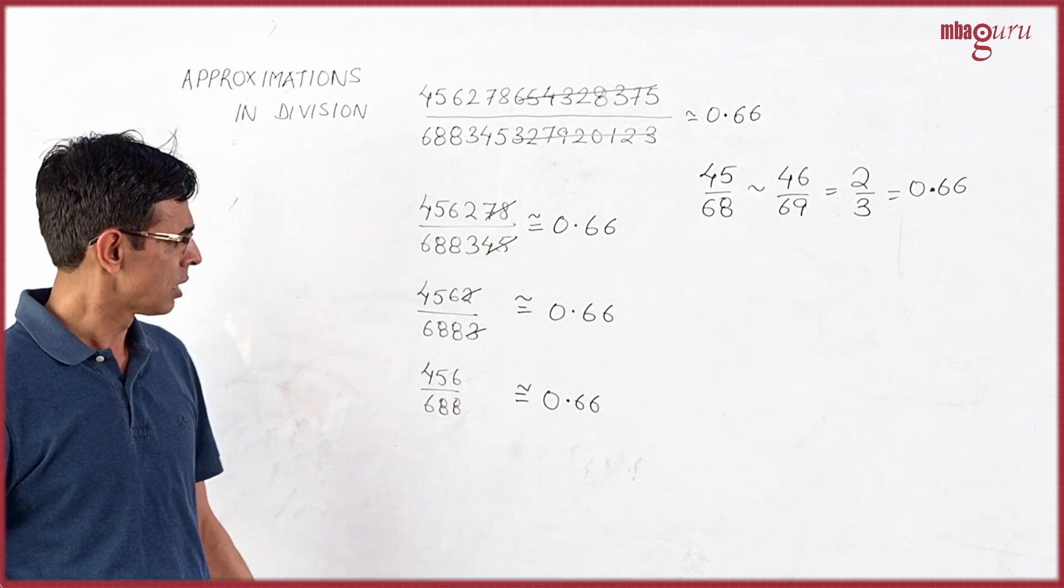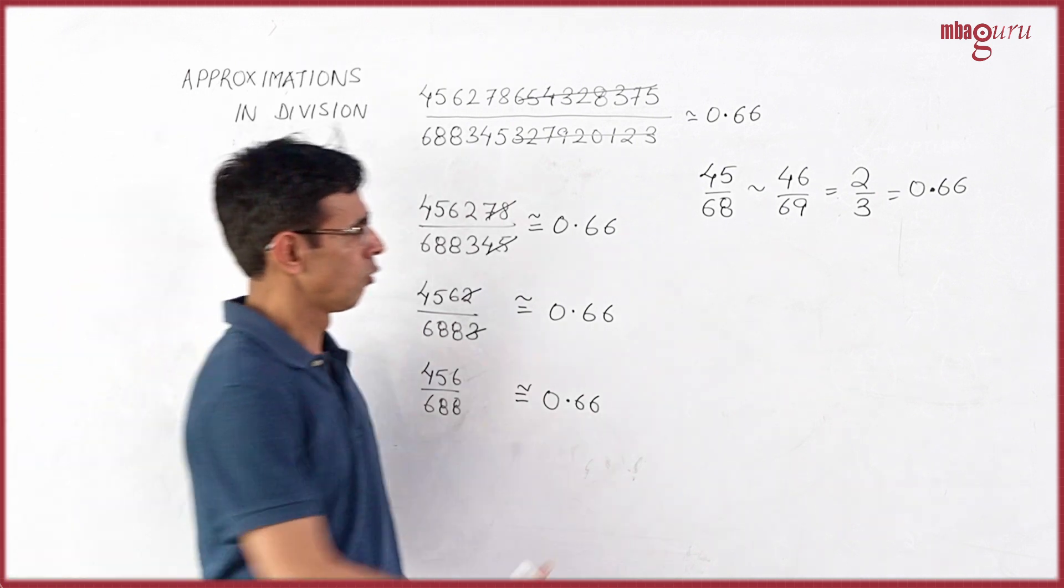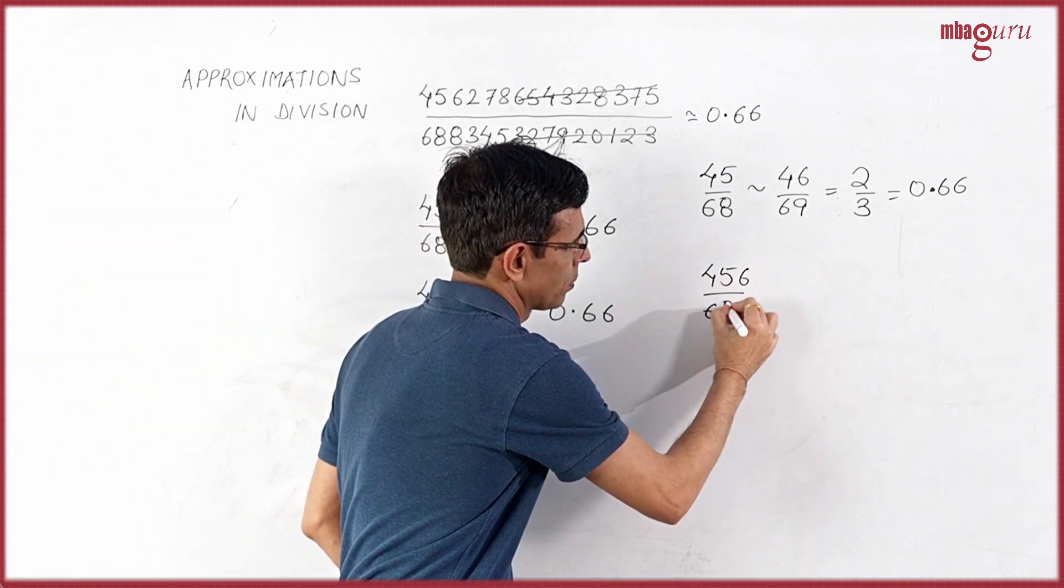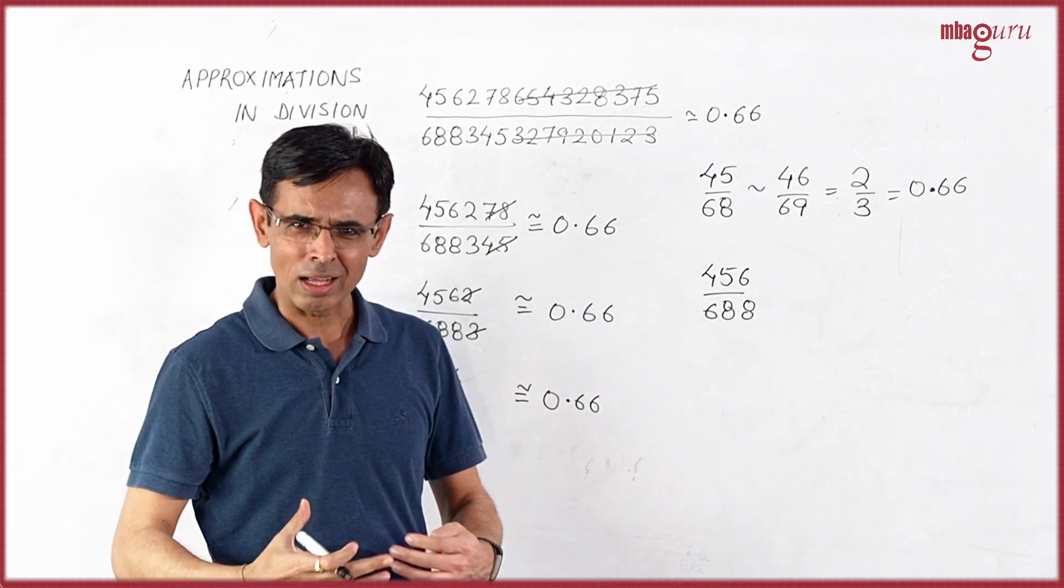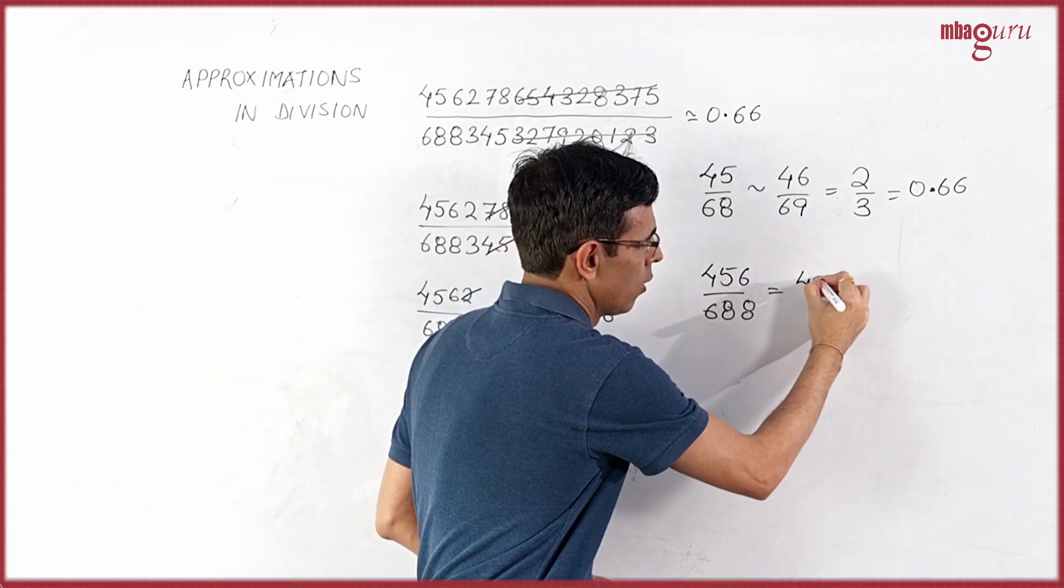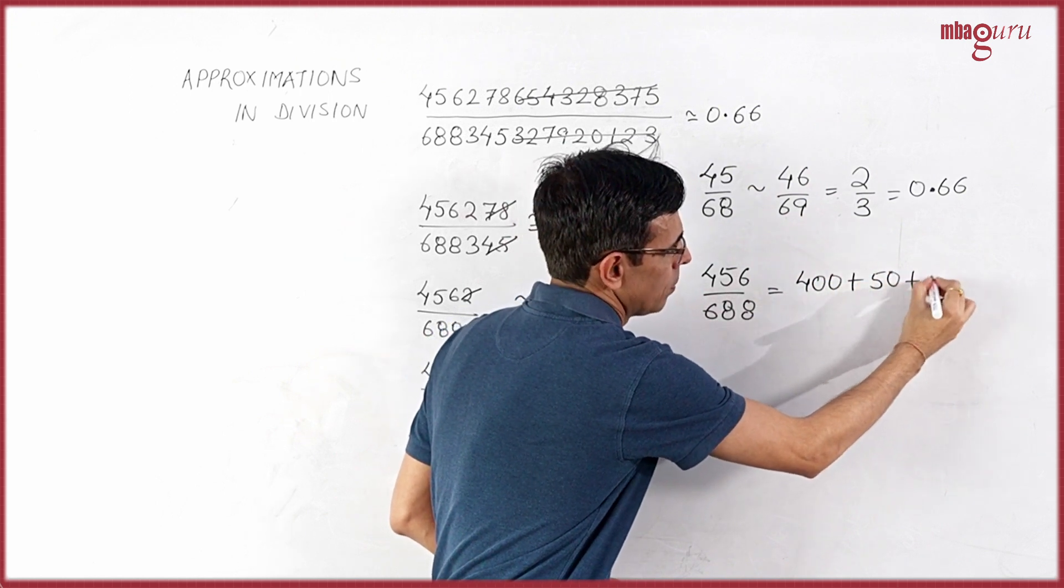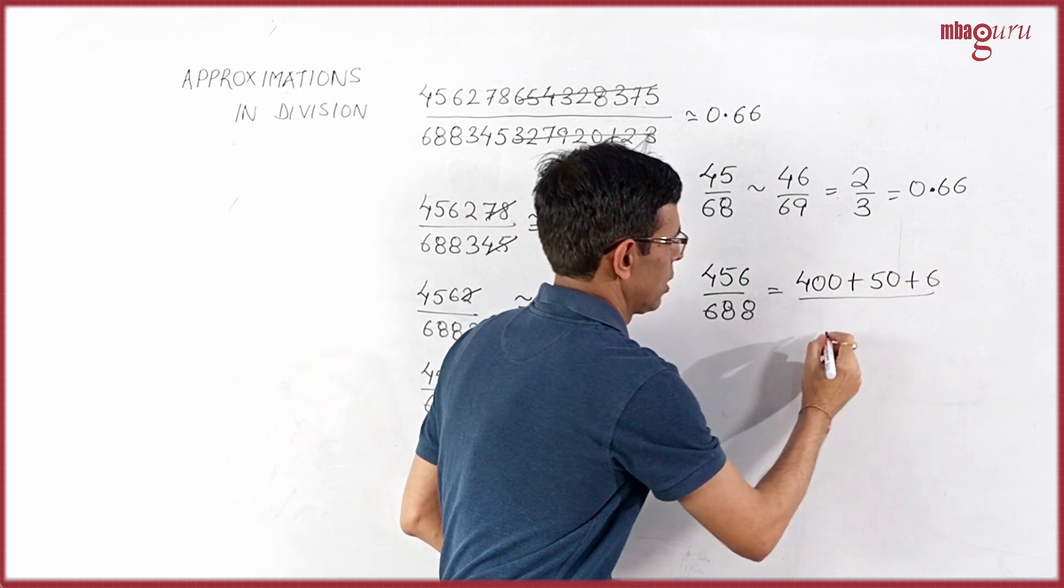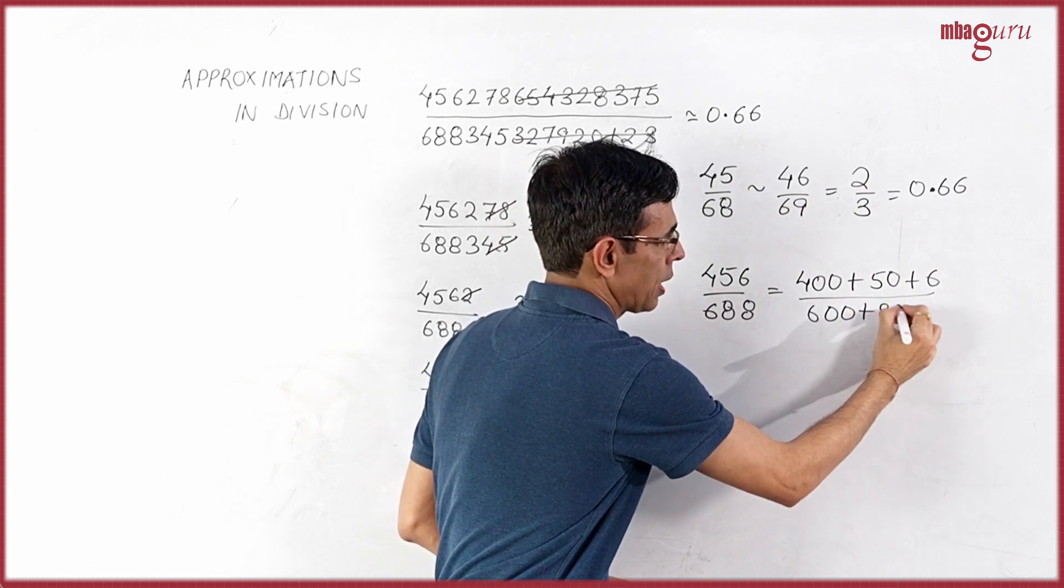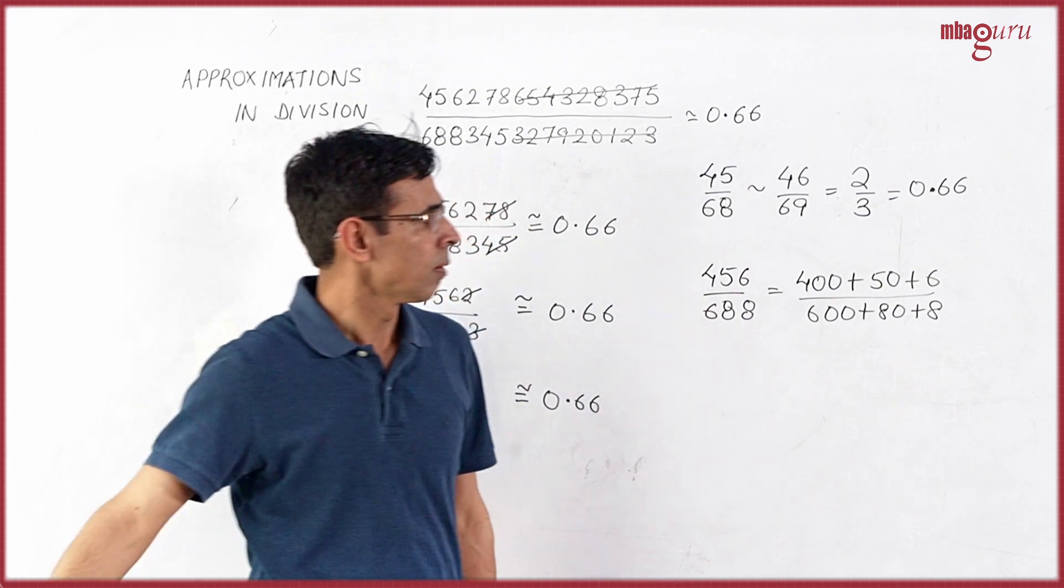Why does it happen? See, when you look at something like this, 456 upon 688, what these numbers are actually? 456 is nothing but 400 plus 50 plus 6. 688 is 600 plus 80 plus 8.